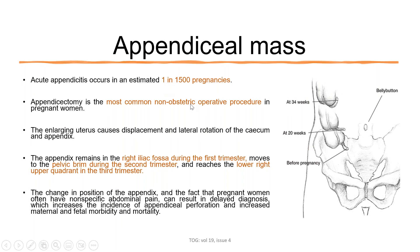Appendiceal mass is also one of the commonest adnexal masses in pregnancy, occurring in about one in 1,500 pregnancies, and is the most common non-obstetric operative procedure in pregnant women. As the gravid uterus enlarges, the appendix shifts position: it lies in the right iliac fossa before pregnancy, moves to the pelvic brim in the second trimester, and to the lower right upper quadrant in the third trimester. Recognizing this positional change is very important when diagnosing acute appendicitis.